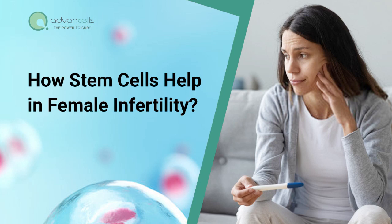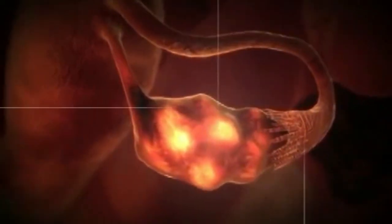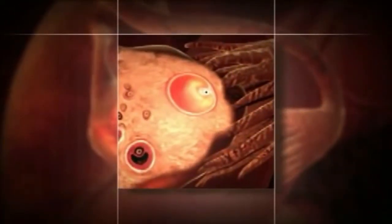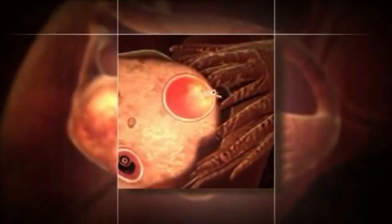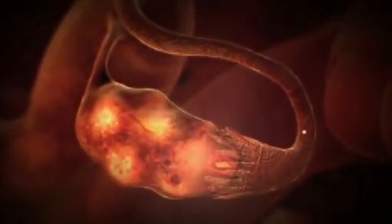How Stem Cells Help in Female Infertility? Endometrial Rejuvenation: Stem cells can aid in regenerating and rejuvenating the endometrial lining. This is crucial for successful embryo implantation during in vitro fertilization procedures, enhancing the chances of a pregnancy being established.